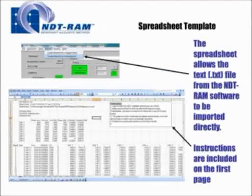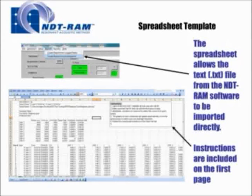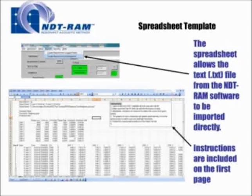We have spreadsheet templates and a report template available for organizing the data and putting it into a report format. The spreadsheet allows you to take the text file generated in the NDT RAM software, import it directly, and it will generate the graphs and table. For each of the templates, the instructions are on the very first page where the data needs to be copied and pasted.